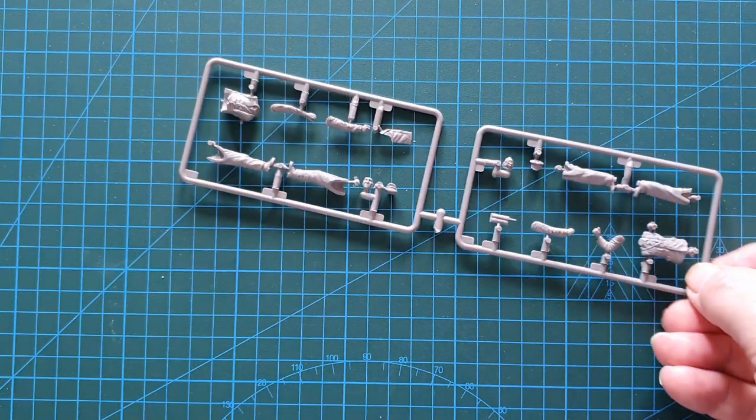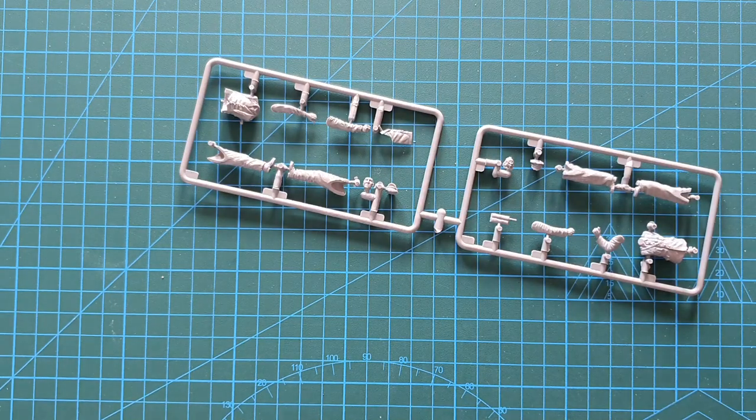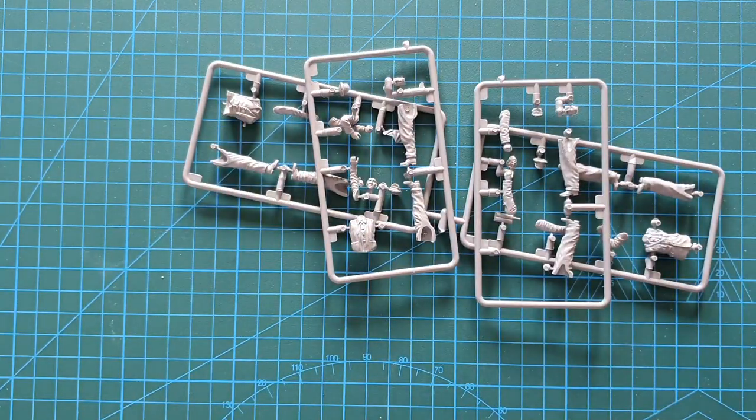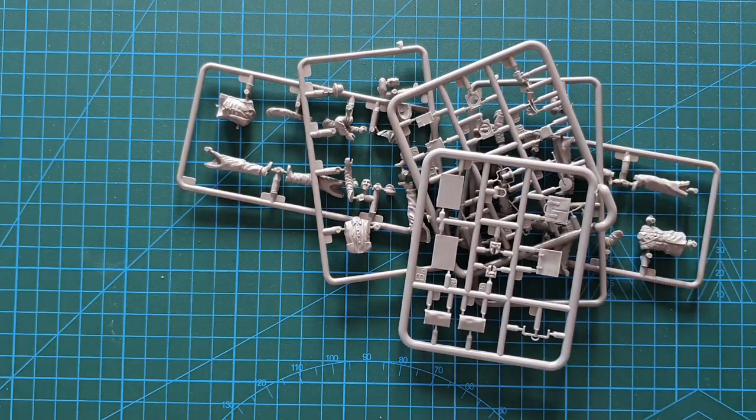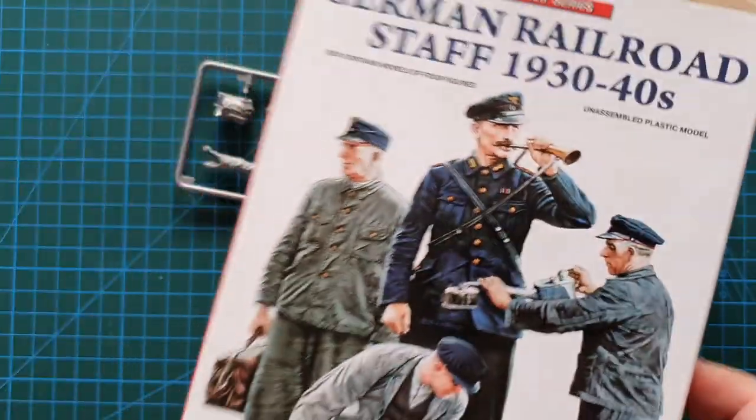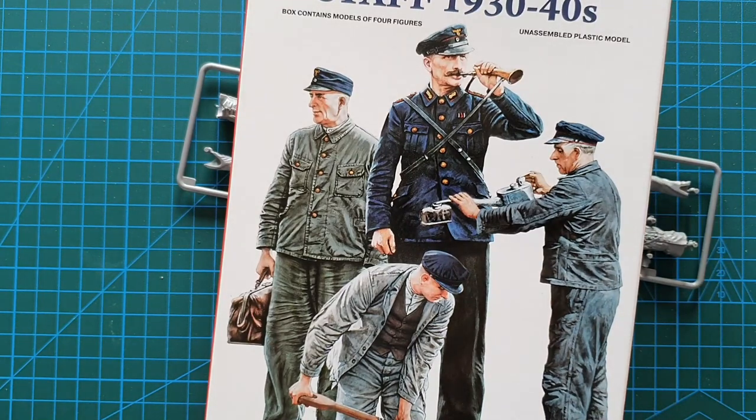And that's it - that is MiniArt's German Railway, sorry, Railroad Staff 1930-40s. This kit cost me around 14 Australian dollars, average price, not too bad. Definitely a great accessory for anyone who has one of the Trumpeter BR or anyone else's German rolling stock.